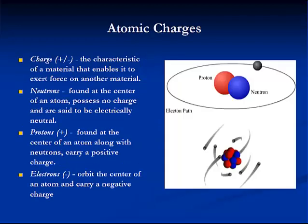So let's take a look at the atomic model, which is the first step in understanding electricity and electronics. A charge is a fundamental property of a material that exerts a force on another material. Neutrons, found at the center of an atom, possess no charge and are said to be electrically neutral. Protons, also found at the center of the atom, carry a positive charge. Electrons orbit the center of an atom and carry a negative charge.